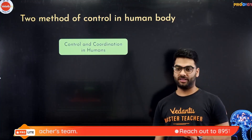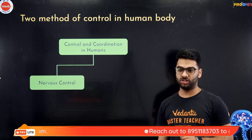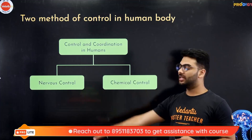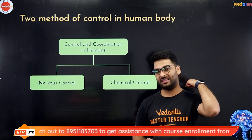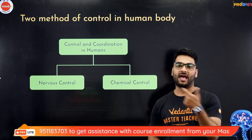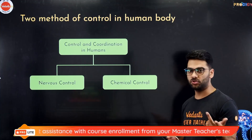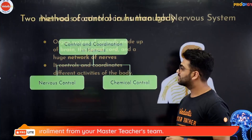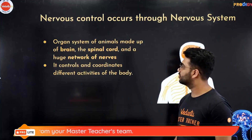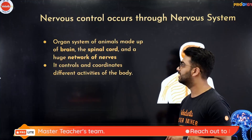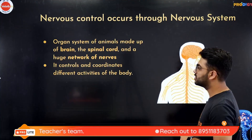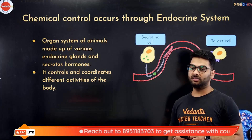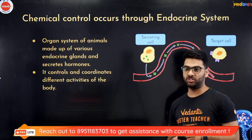There are two methods of control in the body. Control and coordination in humans involves, one, the nervous control and second, the chemical control. The nervous control includes your brain, spinal cord, and nerves. The chemical control is through hormones, which you will also be learning in this chapter. The nervous control system — the organ system of animals made of brain, spinal cord and nerves — controls and coordinates different activities of the body.